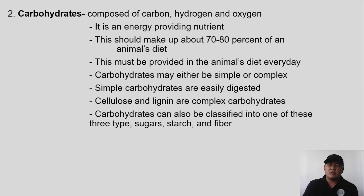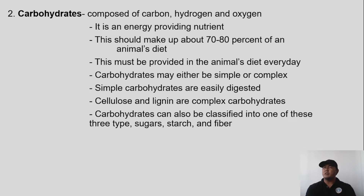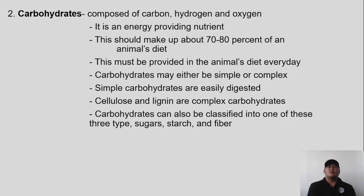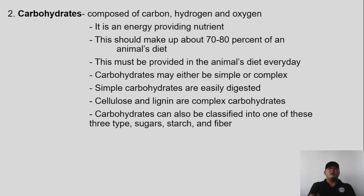Good morning ANSI students, especially the students in Animal Nutrition and Feeding. The last lecture video was on Chapter 2, which is all about animal nutrients. We discussed the definition of nutrients and identified the different types of nutrients — the macro and micro nutrients. We already talked about the first essential nutrient for animals, which is water. Now I'm going to follow it up with the next essential nutrient needed by animals: carbohydrates.